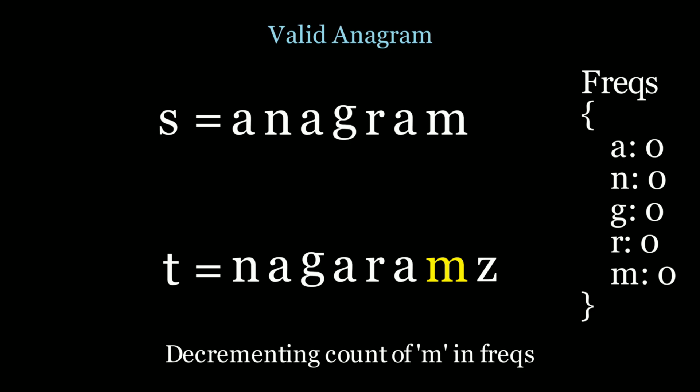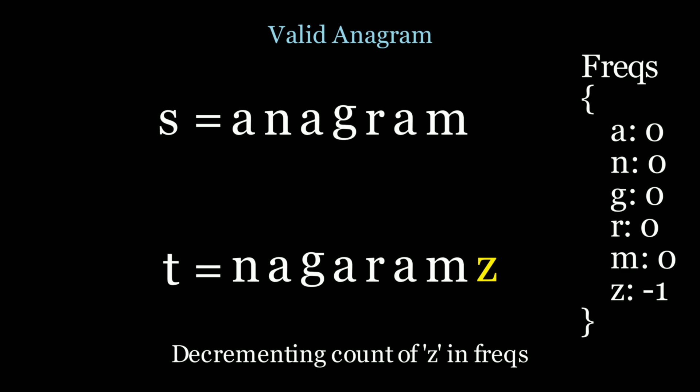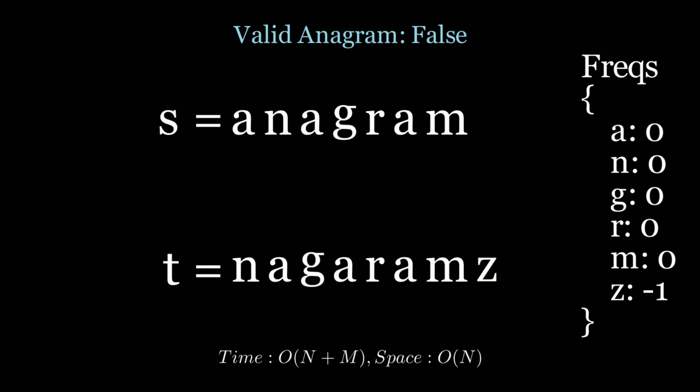What happens if we have a letter in t that's not in s? If we scan an extra letter like 'z', we get a negative value in the hash map. Even if it were an extra 'a' instead of 'z', 'a' would become negative one, meaning t has an excess letter not represented in s. So at the end of the algorithm we need to ensure all values in the frequency map are zero — any positive or negative values mean we return false. The time complexity is O(n + m).